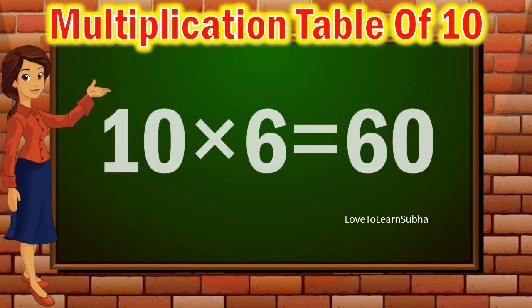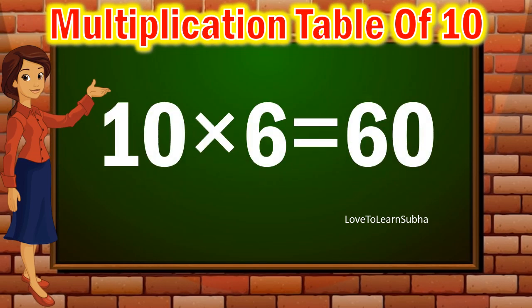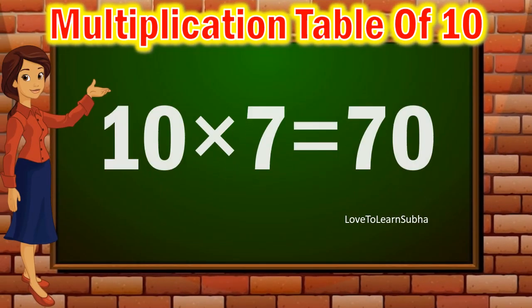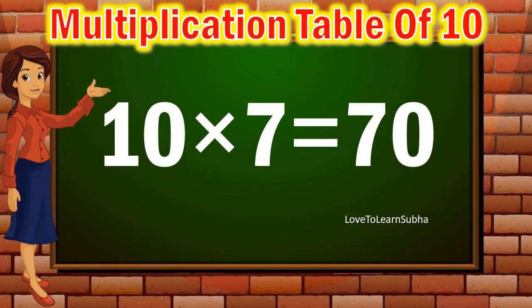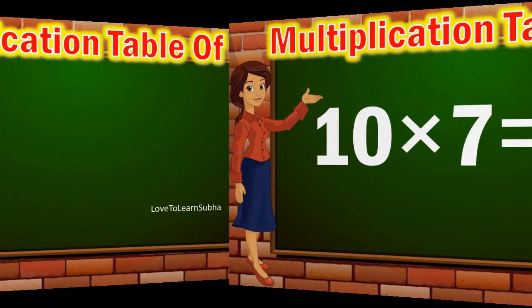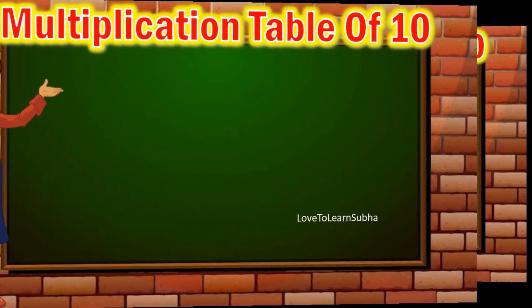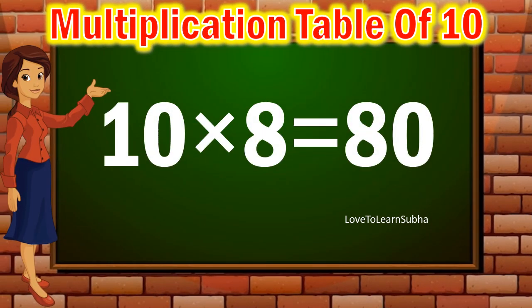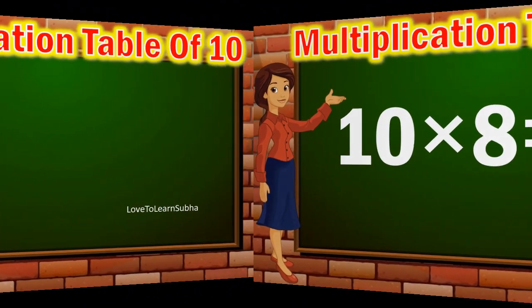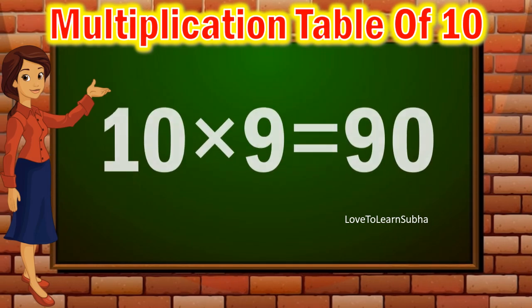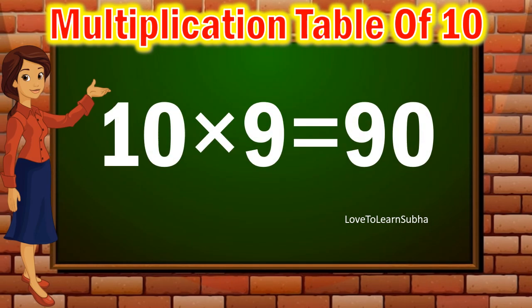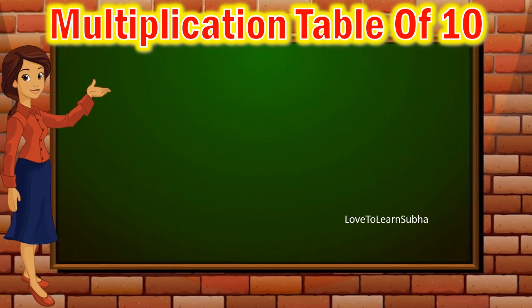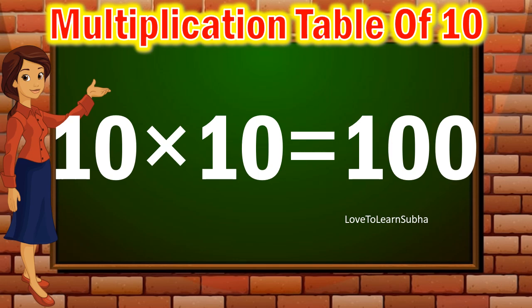Ten sixes are sixty, ten sevens are seventy, ten eights are eighty, ten nines are ninety, ten tens are a hundred.